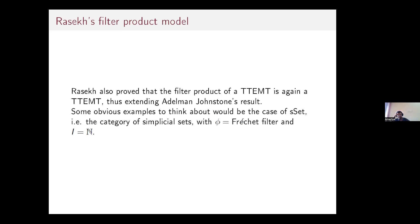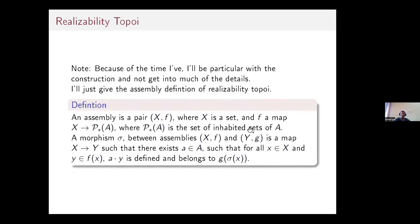An obvious example: take the category of separation sets, take the Fréchet filter, and take I to be the natural numbers. The Fréchet filter is the cofinite filter — an element F is in the filter if its complement is finite, i.e., cofinite. That is the way to think about the Fréchet filter.